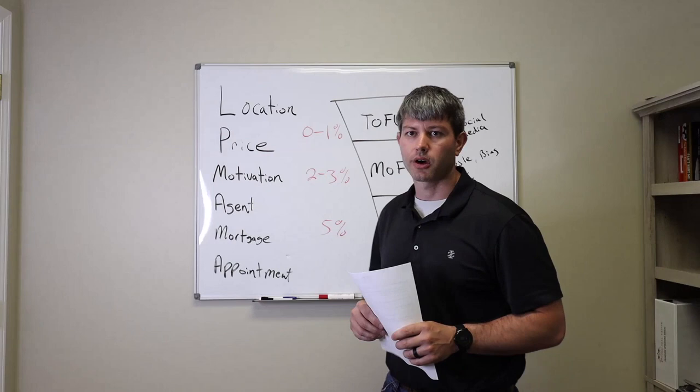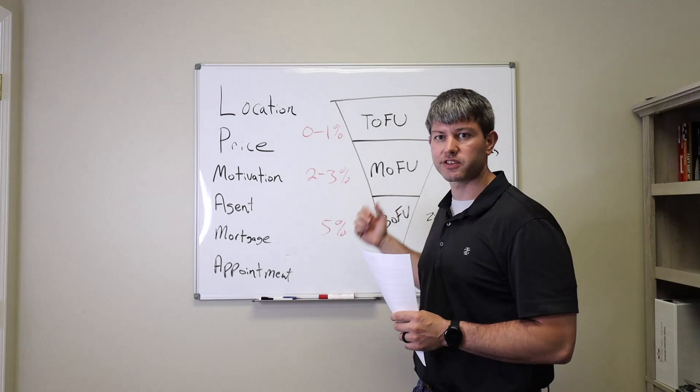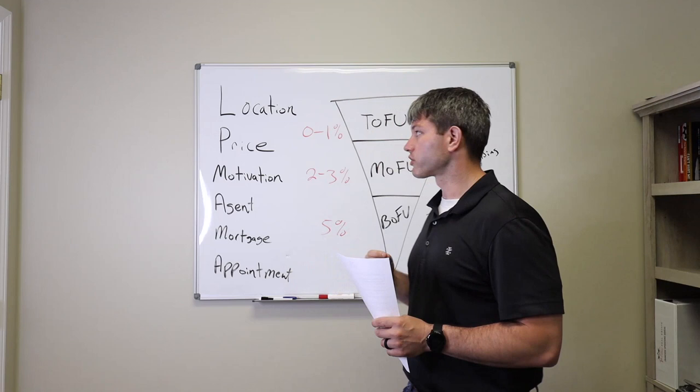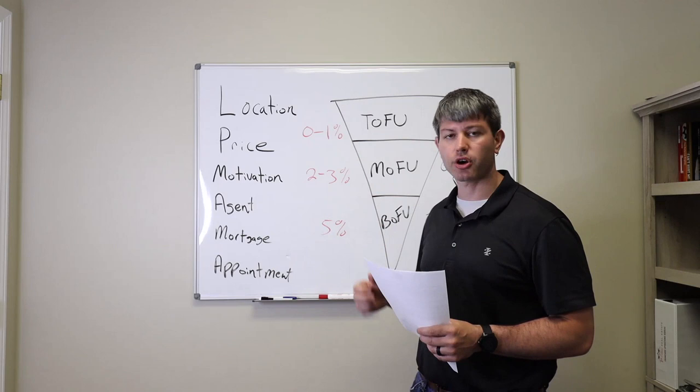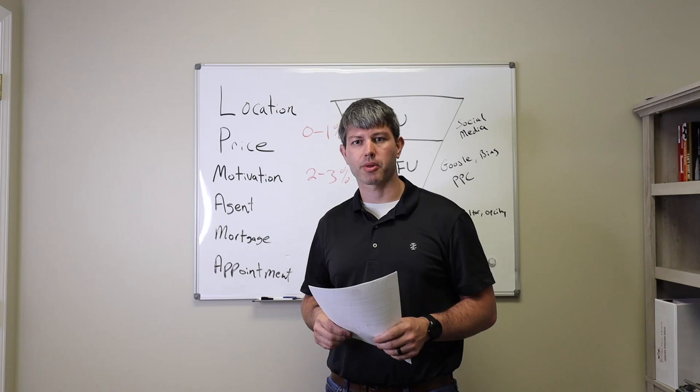So then we talked about, when we came over here, what are the things that we need to get when we're talking to them, depending on where they are in the sales cycle of buying or selling, what do we need to talk to them about? There's an old script that I was taught a long time ago called LP Mama: location, price, motivation, agent, mortgage, appointment. Those are the top things you're always trying to get from all the leads on the initial call to then know your follow-up schedule and your timelines for everyone.